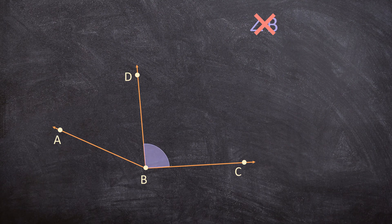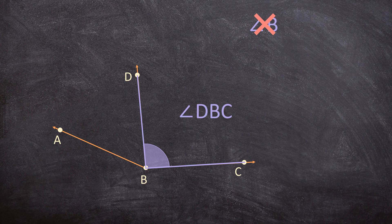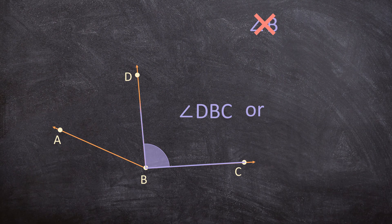When you want to name this angle you will need to use three points to name this angle. So it would either be angle D, B, C or it can be angle C, B, D.